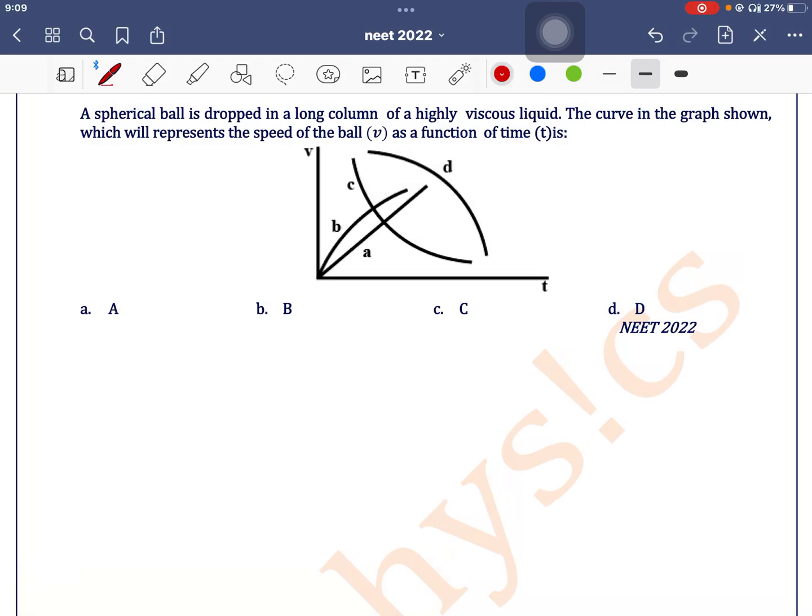A spherical ball is dropped in a long column of highly viscous liquid. The curve in the graph shown which will represent the speed of the ball as a function of time is: